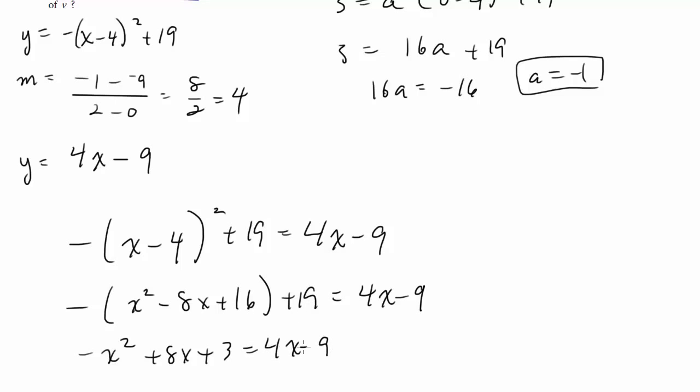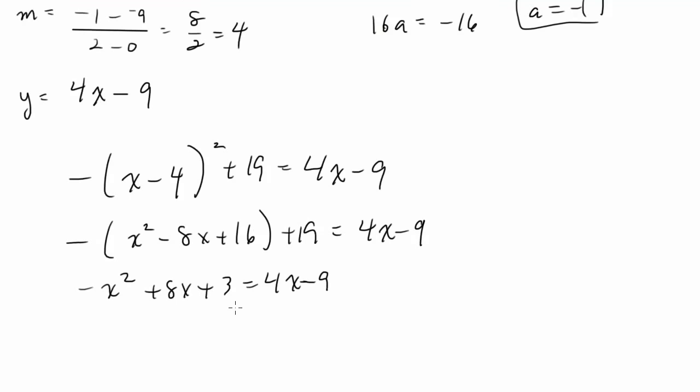Now I'll bring everything over to one side so that I can factor it. Let's bring everything over to the right so that I get a positive x squared, because I don't like dealing with negative x squareds if I don't have to. So I'm going to add x squared to both sides. I get x squared. I'm going to subtract 8x from both sides, so I'll have minus 4x. And I'm going to subtract 3 from both sides, and I'll get minus 12.